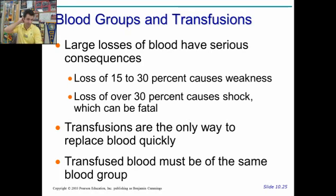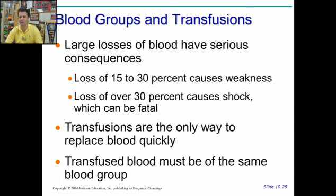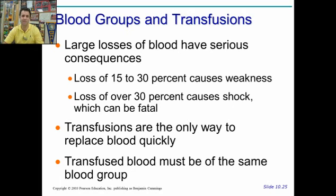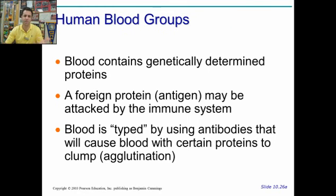If you lose lots of blood, that can be a problem. Losing 15 to 30% causes weakness. Losing over 30%, you can die through shock. Remember that low blood pressure is far more dangerous than high blood pressure, at least in the short term. Temporarily they may put in saline to help boost blood volume to maintain pressure, but that's only short-term because there's no extra oxygen in saline. So you need a blood transfusion, and it needs to be your own blood group.